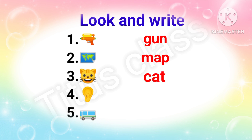C-A-T, cat. Fourth one: ear, E-A-R. Fifth one — yes, it is bus, B-U-S. So we learned: gun, map, cat, ear, bus.